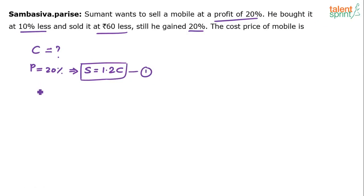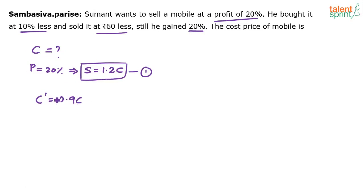Equation 2: he bought it at 10% less. That means his new cost price is only 0.9 times of C. He did not pay 100% of C — he paid only 90% of C, which is 0.9C. And he sold it for Rs 60 less. The new selling price S' is S minus 60.